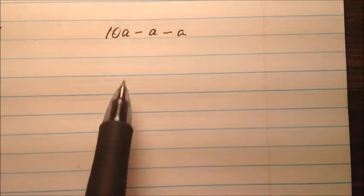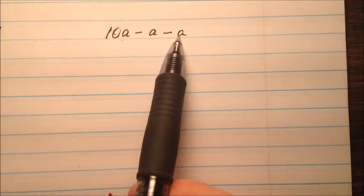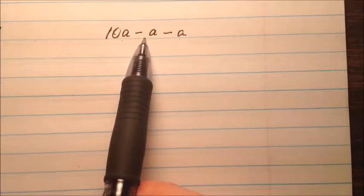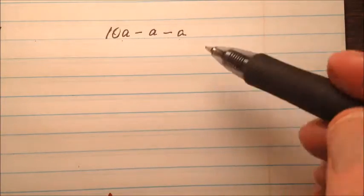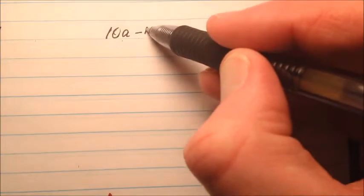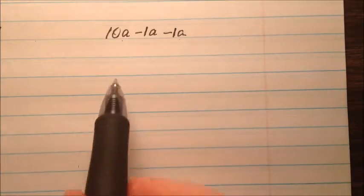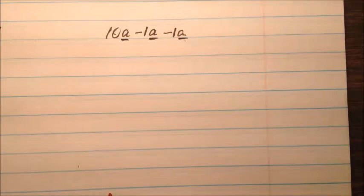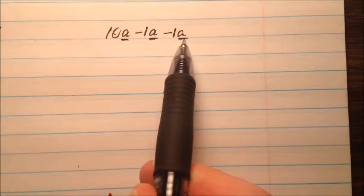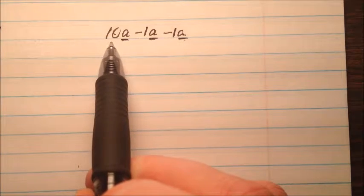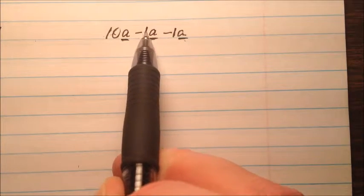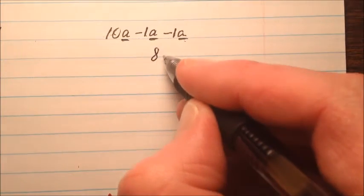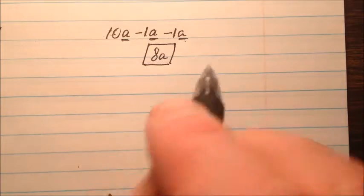In this fourth example I have 10a minus a minus a. Remember if there is not a coefficient stated in front of a variable, it's understood to be 1. I'm going to slip a 1 right there and a 1 right there. They're all like terms because they each have just a single a. So we operate on their coefficients: 10 minus 1 is 9, minus 1 is 8. So it's 8a when we simplify this expression.